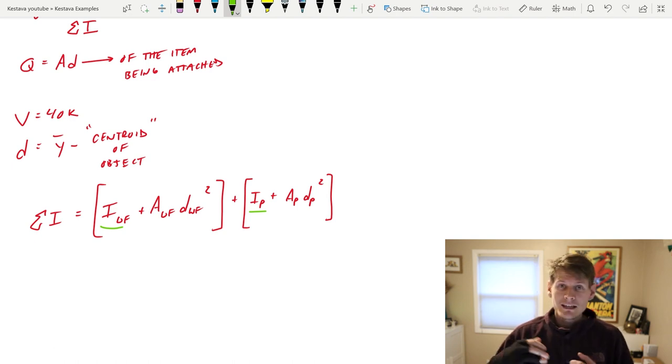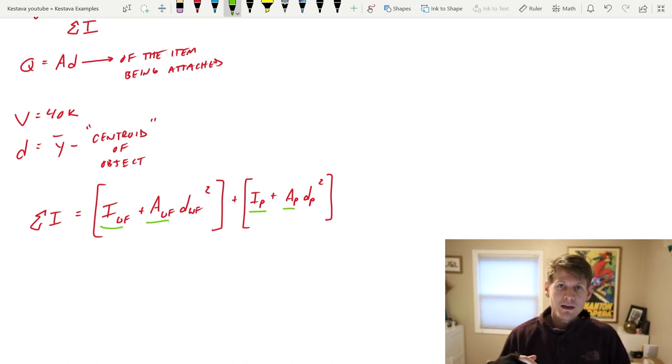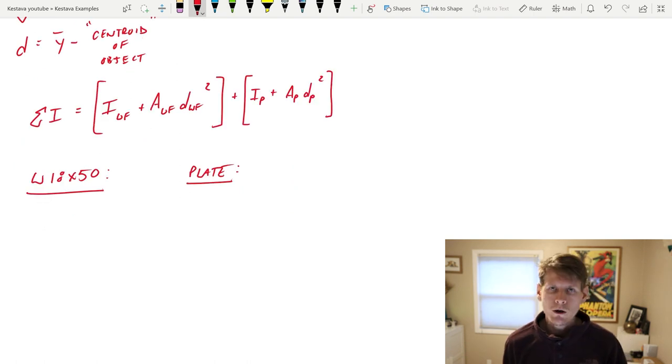Then you also need the area of the component, area of wide flange and area of the plate, and then the distance from the centroid of that object back to the y bar of the entire system. And that's your DWF and DP.